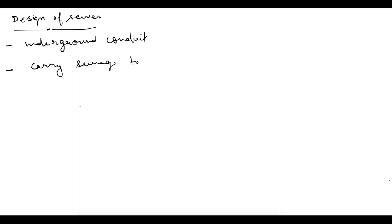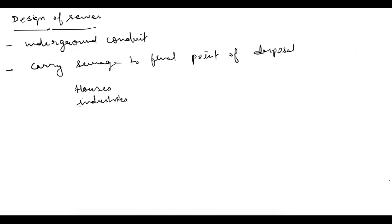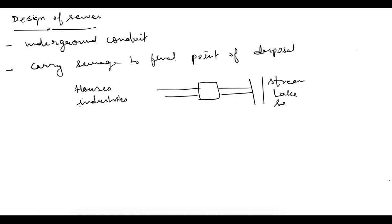Let's see the design of sewer. A sewer is an underground conduit, or simply an underground pipe, which is generally of circular or egg shape. The purpose of this pipe is to carry sewage to the final point of disposal. A sewer takes sewage from houses, industries, and other places generating sewage, carries it to the treatment plant, and from there to the final point of disposal — which can be a stream, lake, or sea. Apart from sewage, a sewer can also be designed to carry stormwater, that is rainwater.